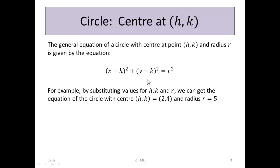For example, we can substitute values for h, k and r. If the centre of the circle h, k is at 2, 4 — where h is 2 and k is 4 — and where the radius of that circle is 5, so r is 5, we can define the precise circle with centre 2, 4 and radius 5.